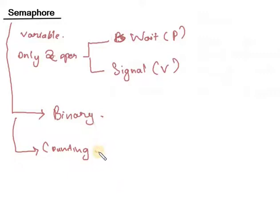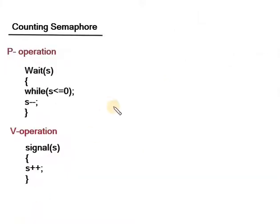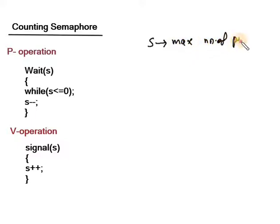Let's first look at the counting semaphore. Here S represents the maximum number of processes that can enter into a critical section. When any process wants to enter the critical section, it executes the P operation. When any process comes out from the critical section, the V operation is executed.